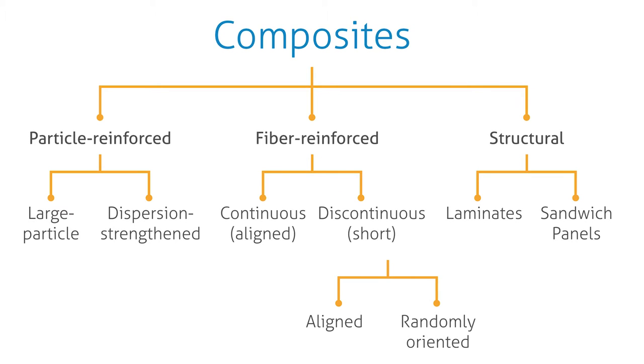Composites have strengths that depend on the orientation of the material being added. You typically break them down into a matrix and an additive that enhances properties. There are three classes: particle reinforced composites, fiber reinforced composites, and structural composites. Fiber reinforced examples include tennis rackets; structural composites include laminates like plywood. Particle reinforced composites include large particles like rocks added to concrete, or dispersion-strengthened smaller particles. Concrete is basically a particle reinforced composite.